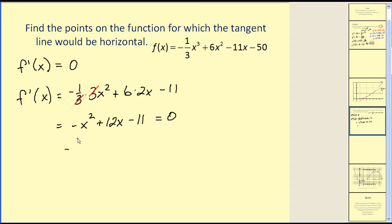Let's factor out the negative. Notice it changes the sign of all of the terms. And this does factor. The factors of positive 11 that add to negative 12, that would be negative 11 and a negative 1. So the solutions to this would be x equals 11 and x equals 1. Now these are the x coordinates.